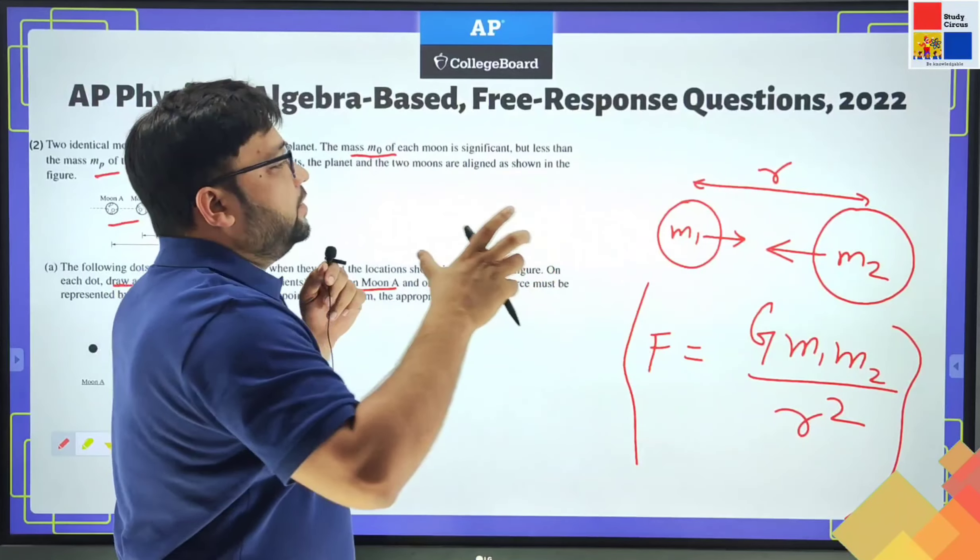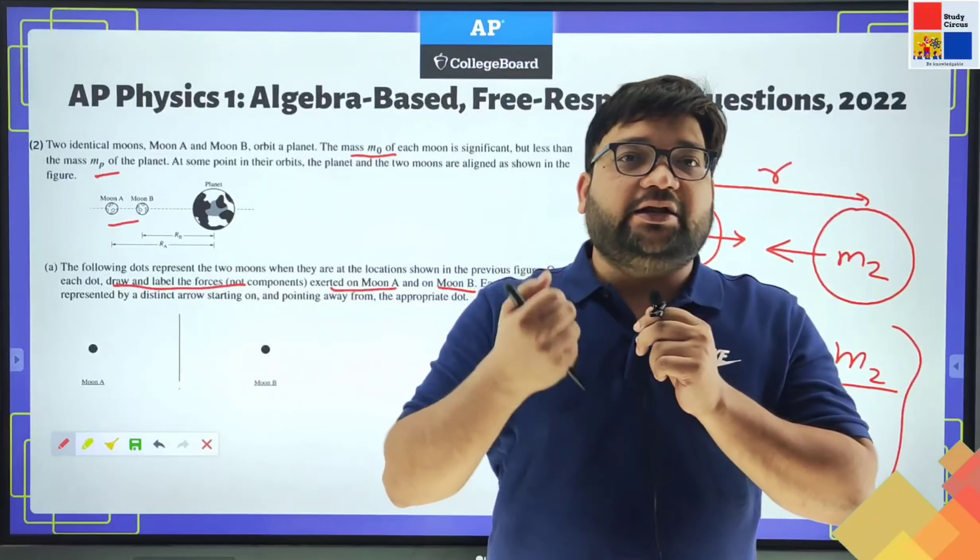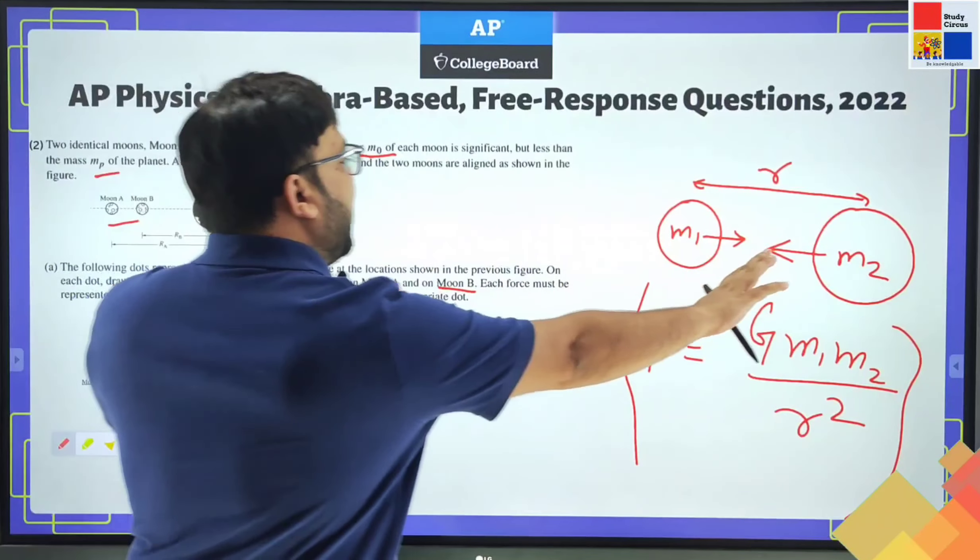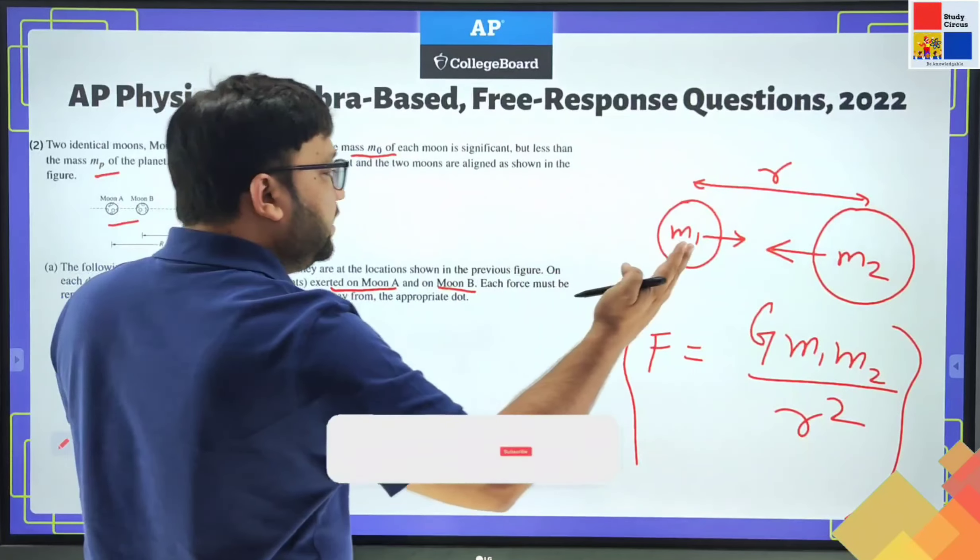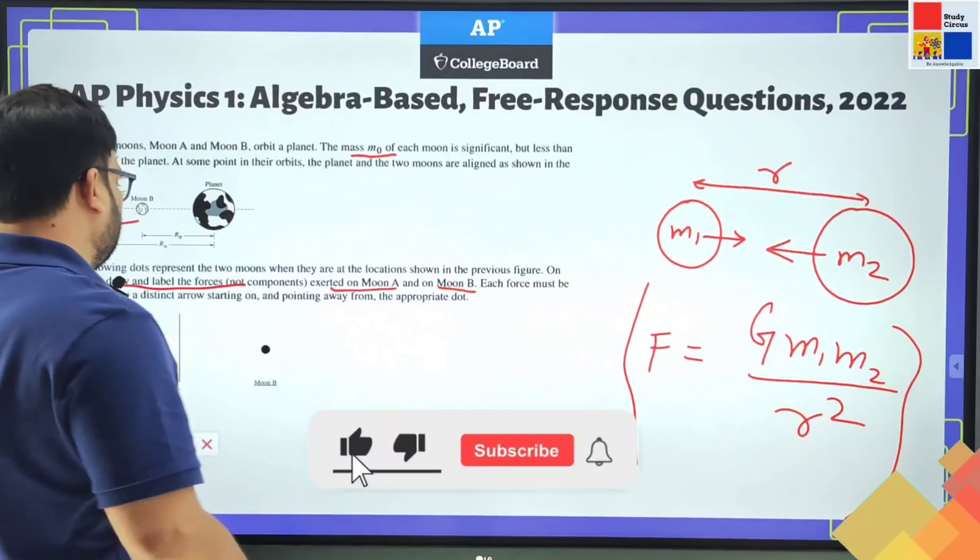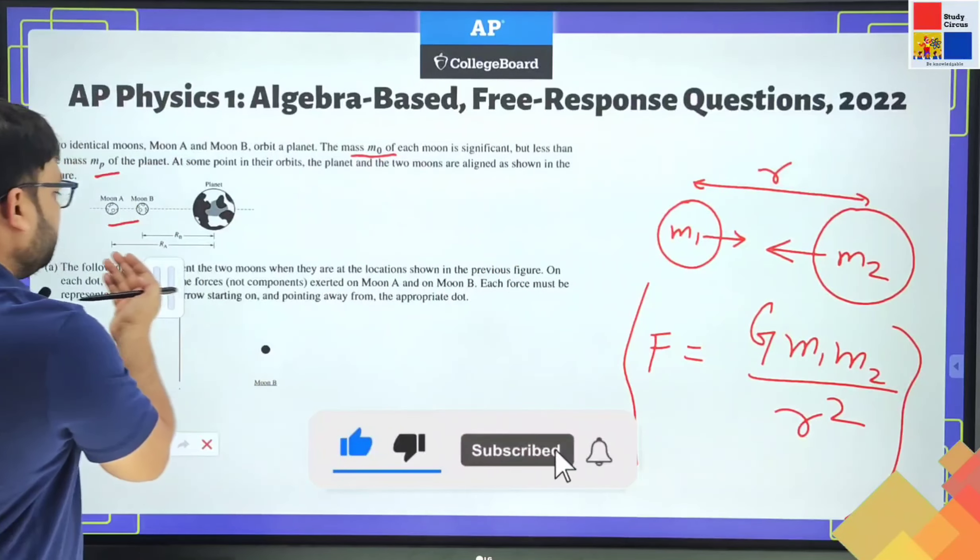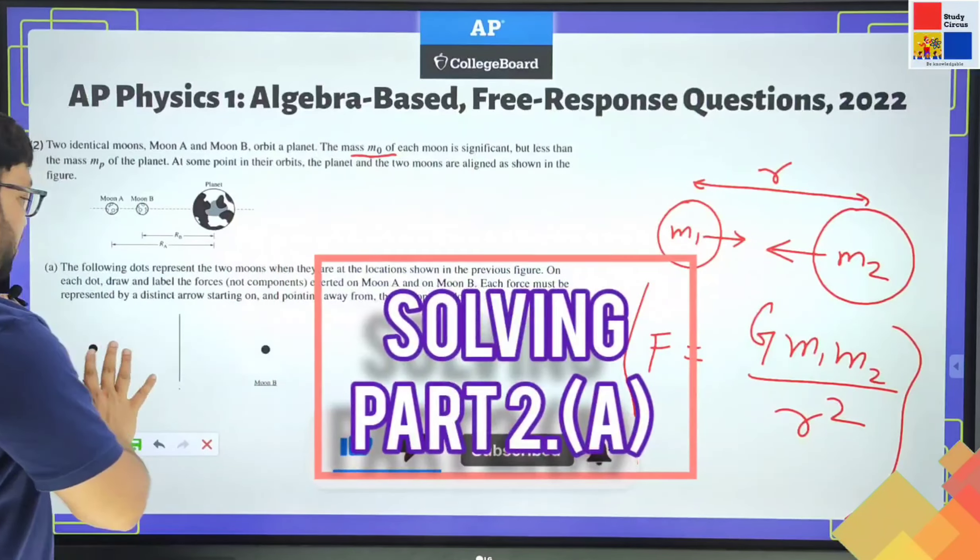The force is that of pulling. It is attractive in nature. One body having some mass pulls another body with some mass. So let's try to answer part A here for this question.